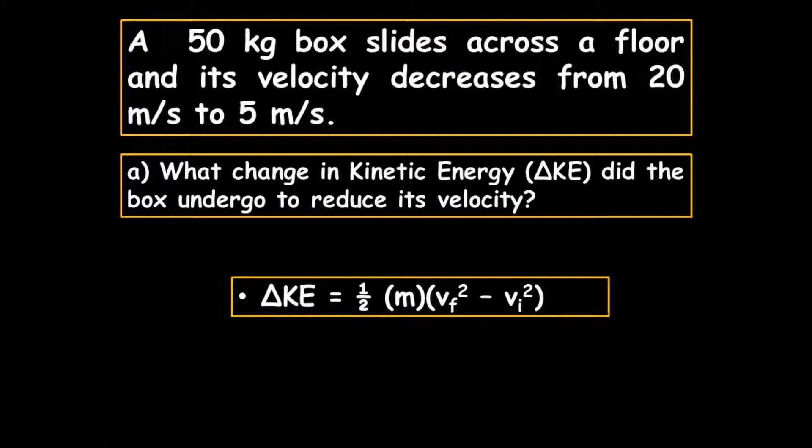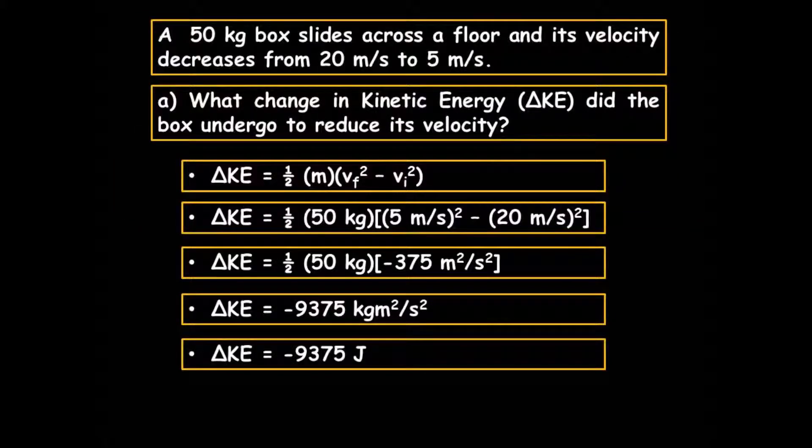It is not a binomial squared, as in (VF minus VI) squared. It is a difference of squares: VF squared minus VI squared. Plugging into the equation, the final velocity is 5 squared minus the initial velocity 20 squared, and that's going to be negative 375 meters squared per second squared. That will be multiplied by one-half times 50, and the answer is negative 9,375 kilogram meters squared per second squared. A kilogram meter squared per second squared is the same thing as a joule.